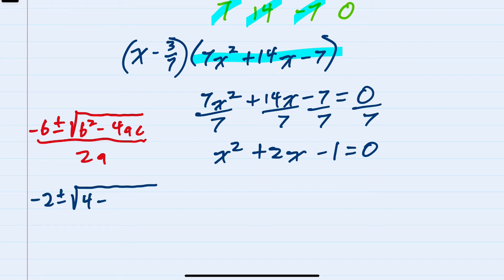Which is four, minus four times a which is now one, and times c which is negative one, over two times a.